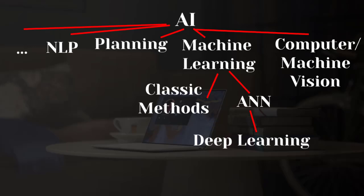In the artificial intelligence area we have different subcategories, such as machine vision, machine learning, planning, natural language processing, and more. As you can see, machine learning is a part of artificial intelligence — it's a subcategory of AI and not the whole of artificial intelligence. Some people think that machine learning is exactly the same as artificial intelligence, but it's not.